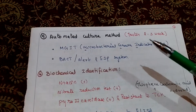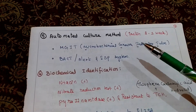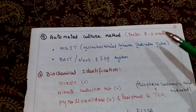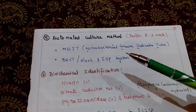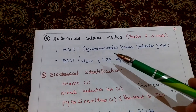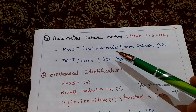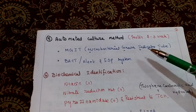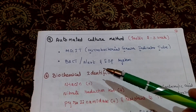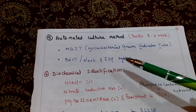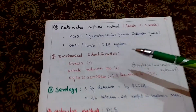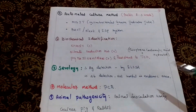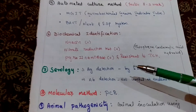The automated culture method takes only 2 to 3 weeks. Here we use MGIT — Mycobacterial Growth Indicator Tube. The BACTEC MGIT and ESP system are used for the automated culture method.